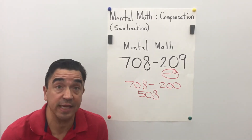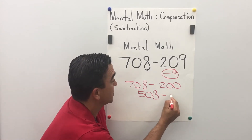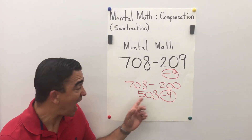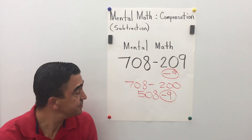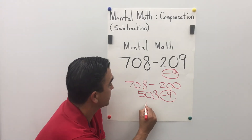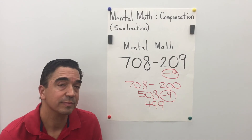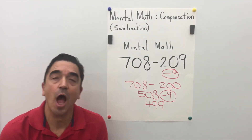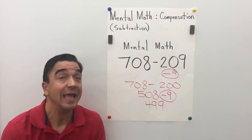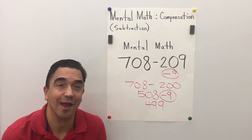I subtracted 9 from 209, so I'm going to have to subtract 9 from 508 as well. 508 minus 9 equals 499. So 708 minus 209 equals 499.